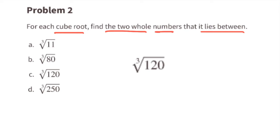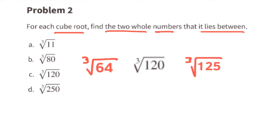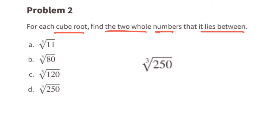Part c: the cube root of 120. That's going to be similar to the last one. It lies between the cube root of 64 and the cube root of 125 for the same reason as the last one. The cube root of 120 lies between 4 and 5.